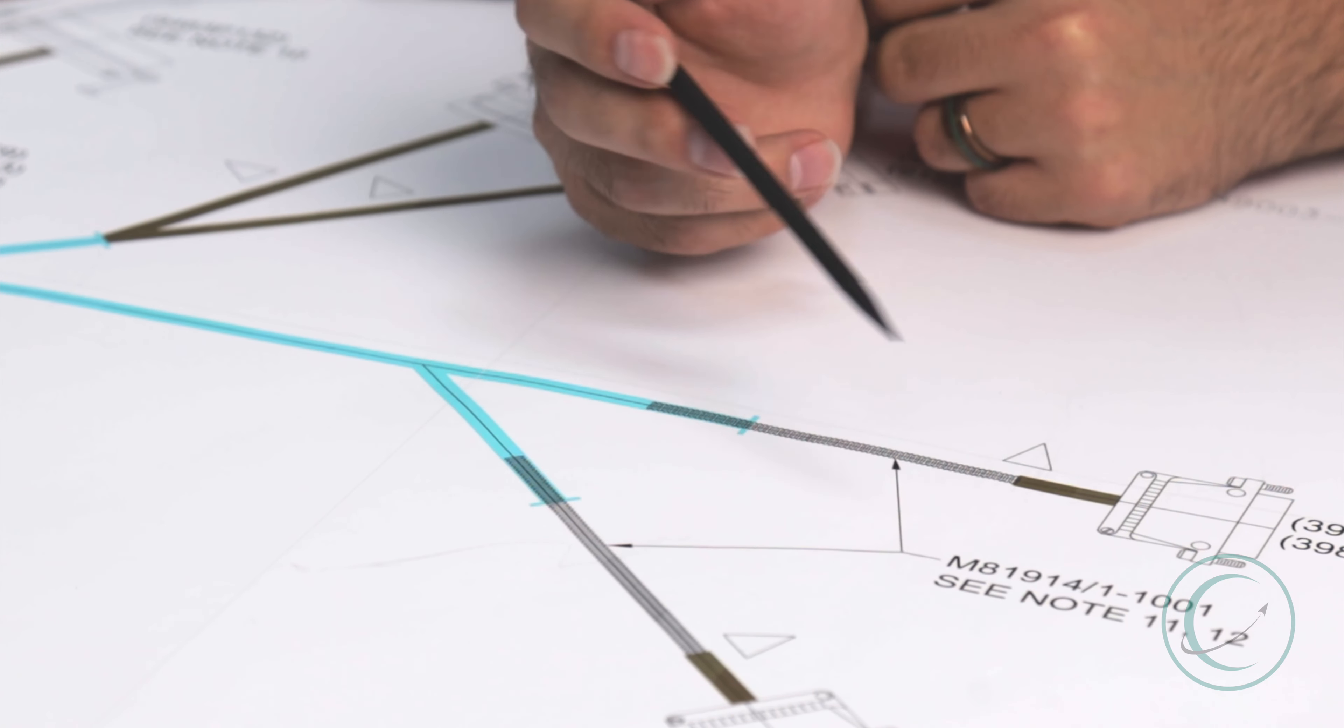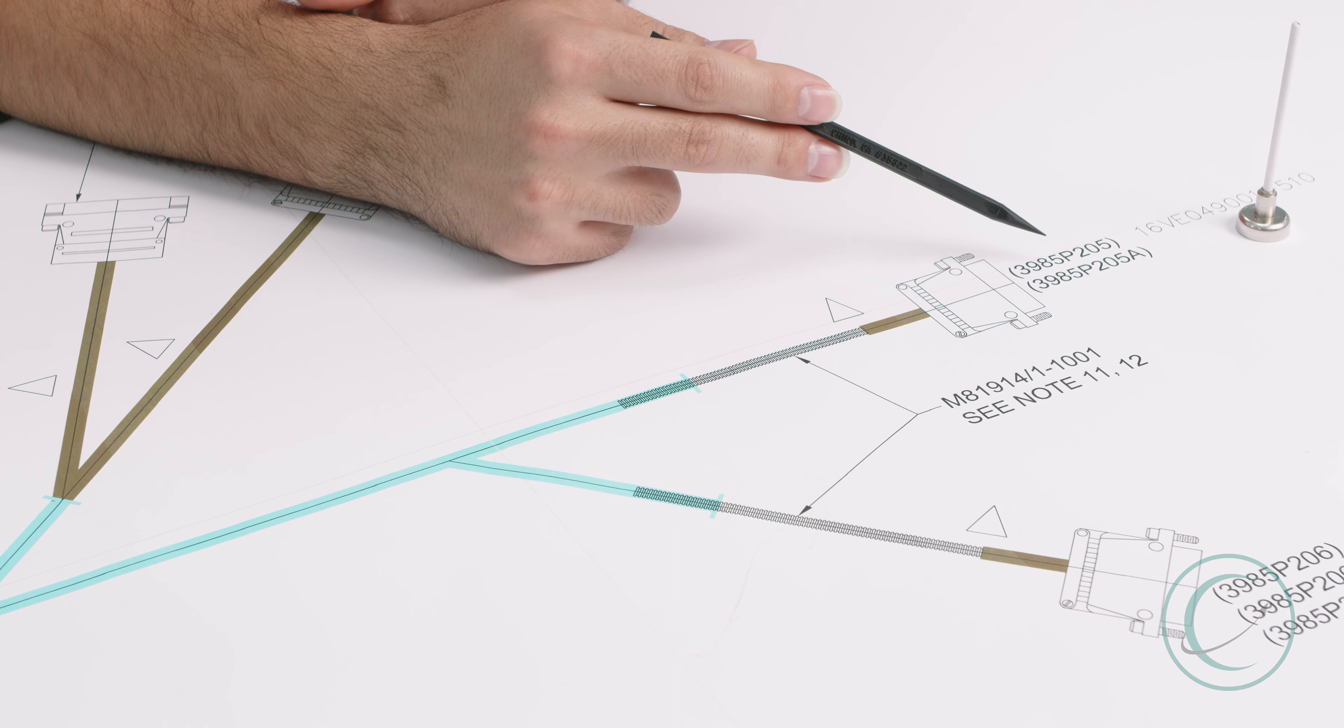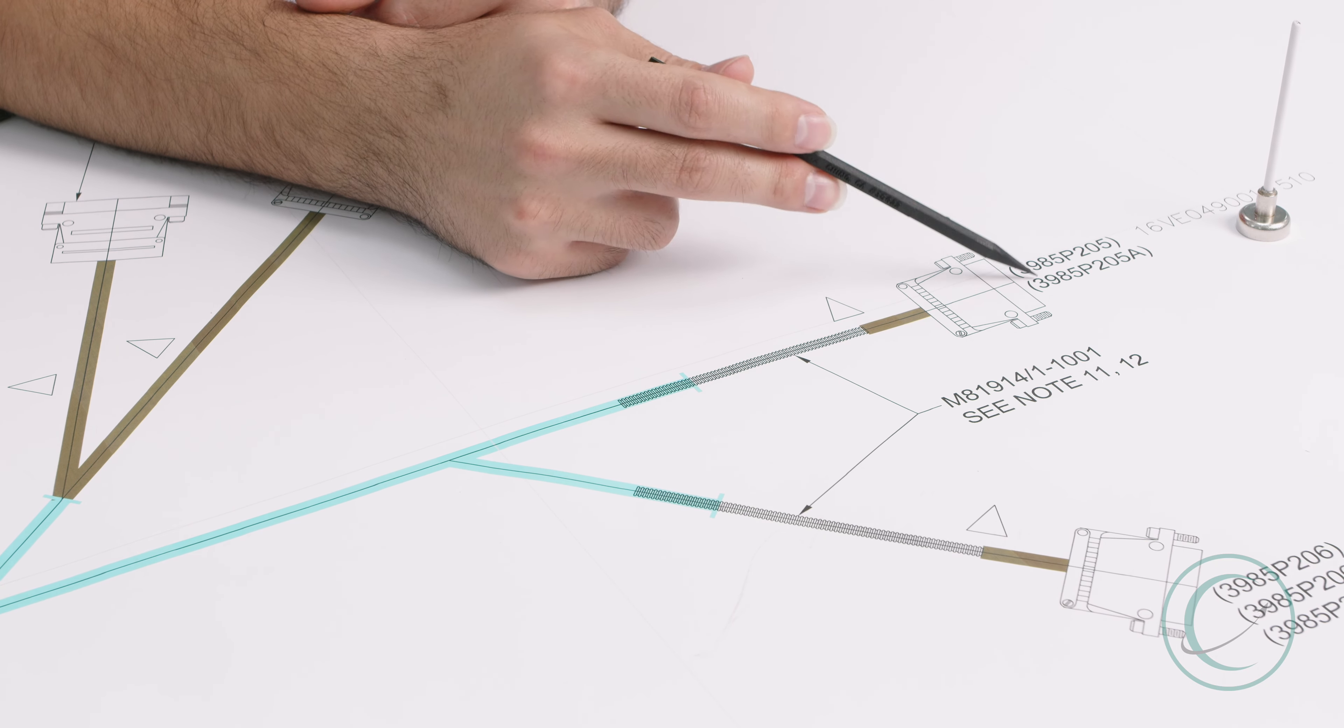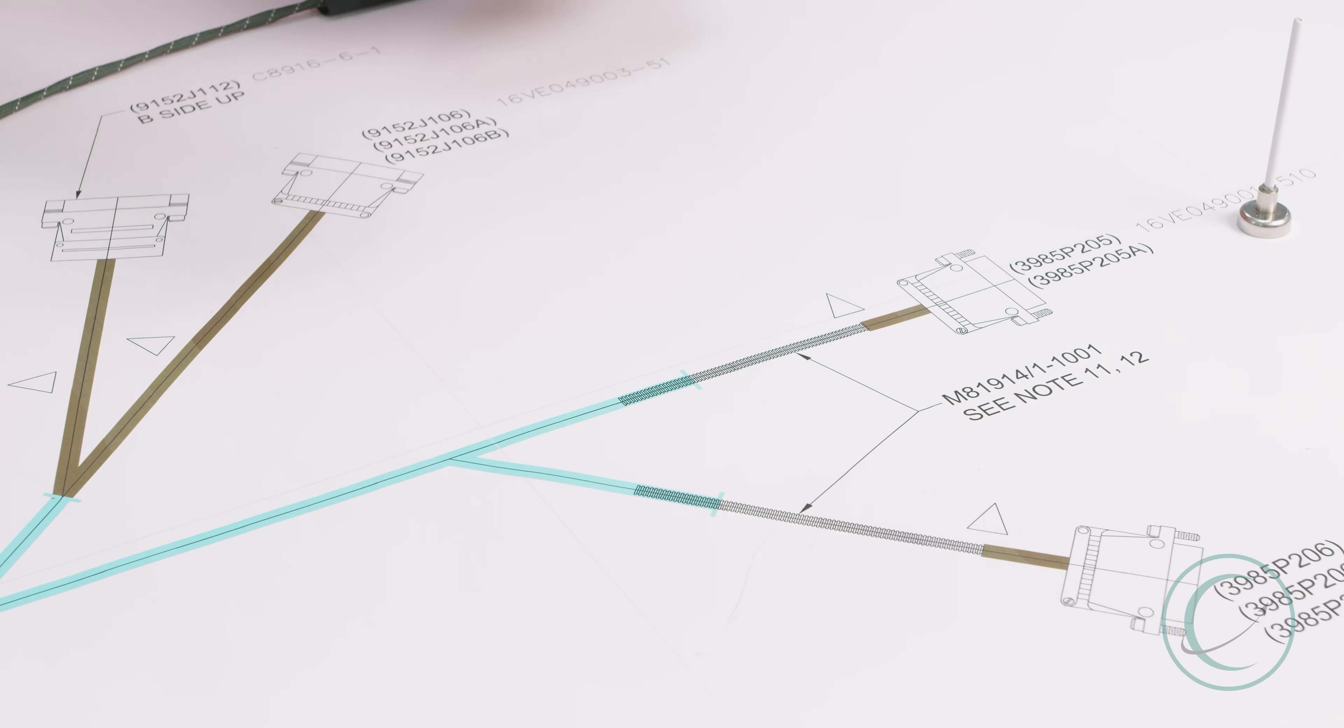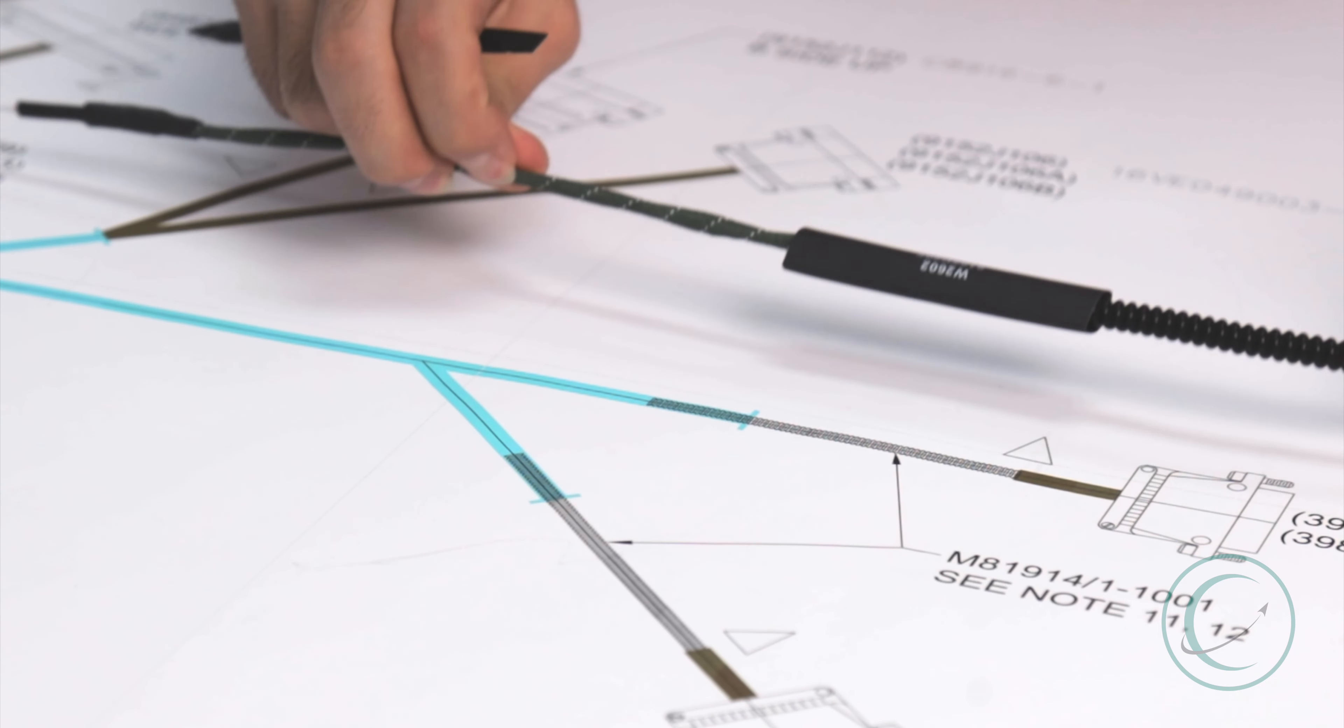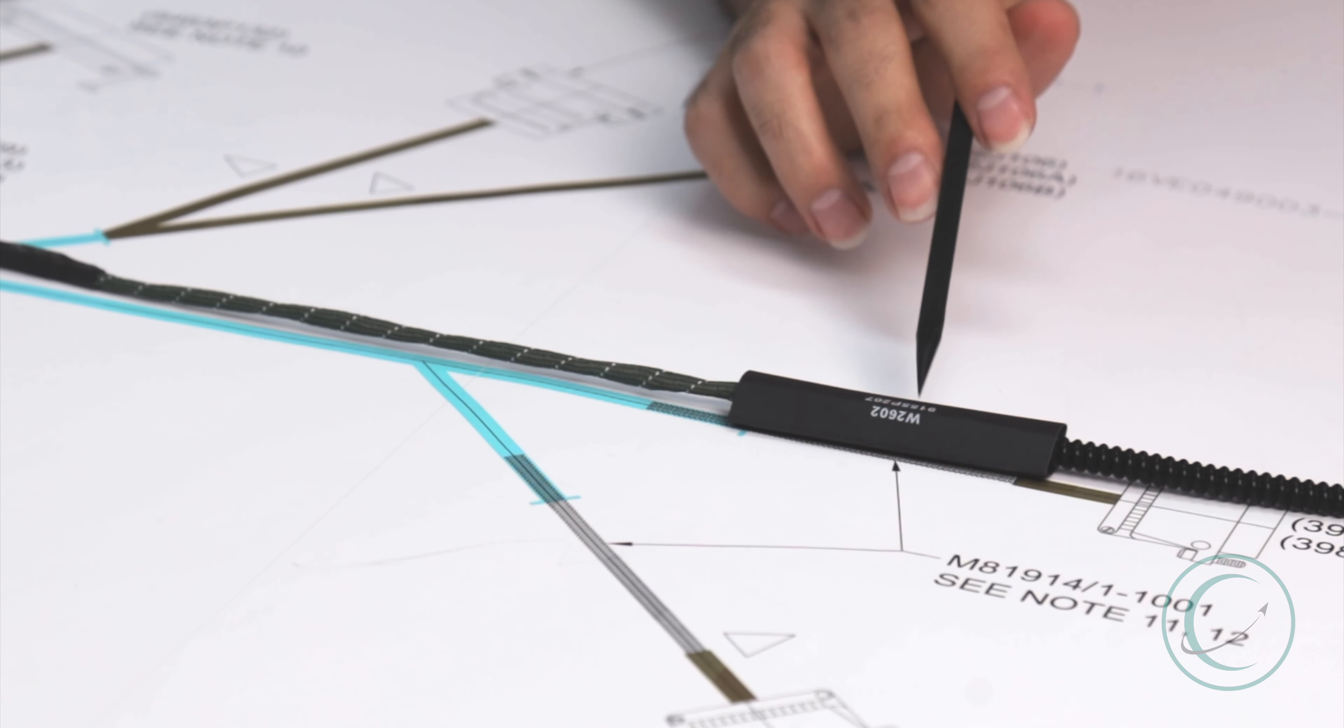When shrinking a reference designator, there's a couple things you want to take note. You want to make sure that you place it in the correct location. In this case, the triangle denotes the location. You also want to make sure that the words printed on it match the location that you're shrinking it to.